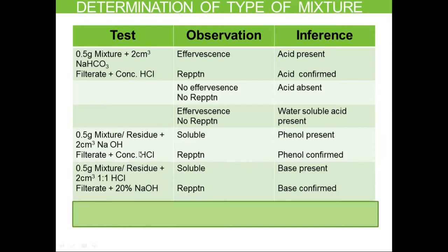We move on to test 3. The residue is washed only with water since no phenol is present. The washed residue is then treated with 1:1 HCl, shaken well, filtered, and to the filtrate we add 20% NaOH. Again, there is no reprecipitation observed. Hence, a base would be absent. We confirm the filtrate is alkaline by placing a drop on red litmus — it turns blue — but still no reprecipitation, confirming base is absent.